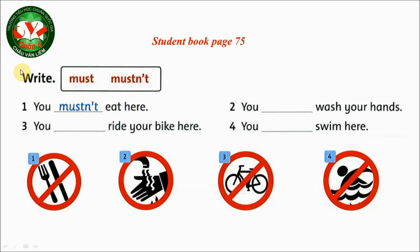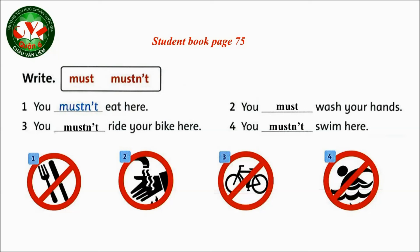Next exercise — write 'must' or 'mustn't.' Number 1: 'You mustn't eat here.' Number 2: Look at the picture — this is 'must,' so the correct answer is 'You must wash your hands.' Number 3: This is 'mustn't' — the correct answer is 'You mustn't ride your bike here.' Number 4: This is 'mustn't' — the answer is 'You mustn't swim here.'